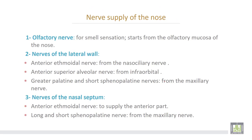Nerve supply of the nose: number one, the olfactory nerve for smell sensation, which starts from the olfactory mucosa, is directed to the olfactory bulb, and ends in the olfactory nerve.